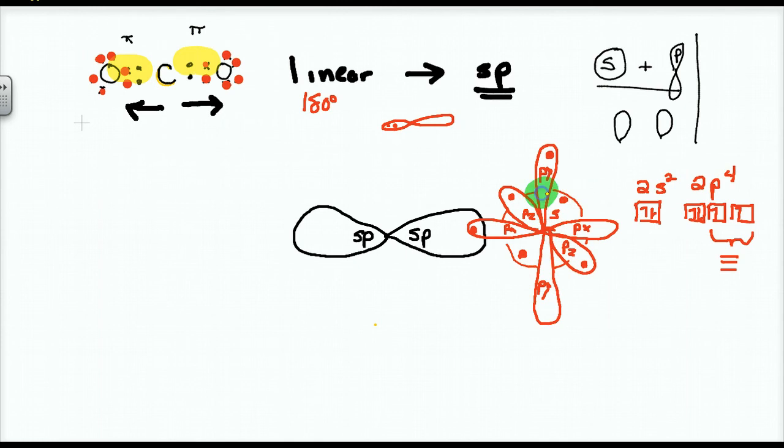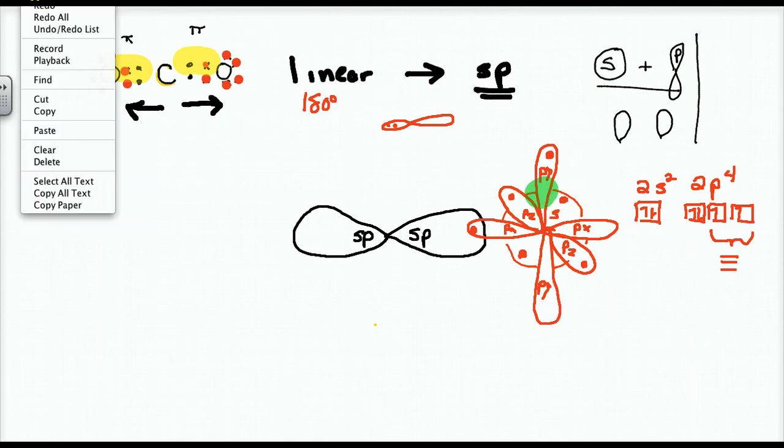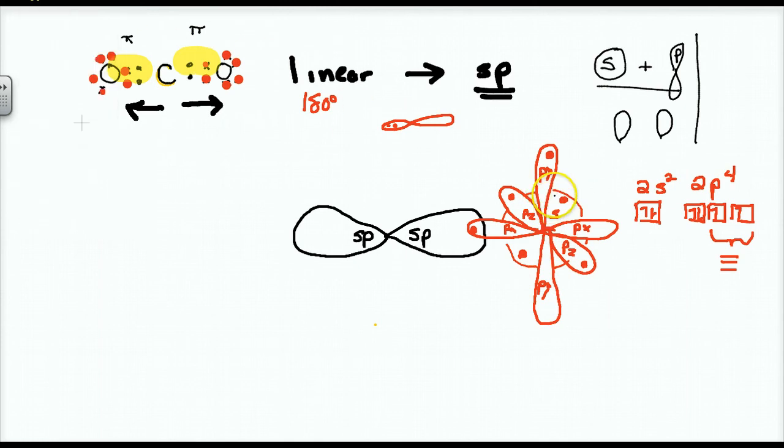If you look at the configuration of oxygen, 1S2, I don't care about that's filled, 2S2, 2P4. If you look at the boxes, that orbital notation, the S is filled. I showed two dots there. And then we have three Ps. Each of those dumbbell shapes has a box when we use orbital notation. And 2P4 means we have two, count them, two unfilled orbitals right there. And I'm showing them, and I'm going to color code this a little bit.